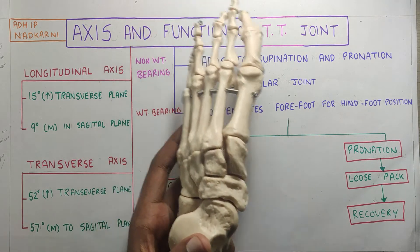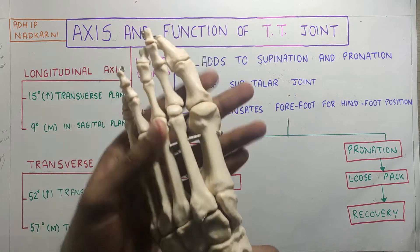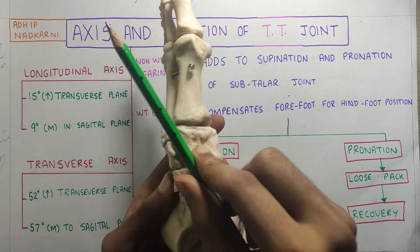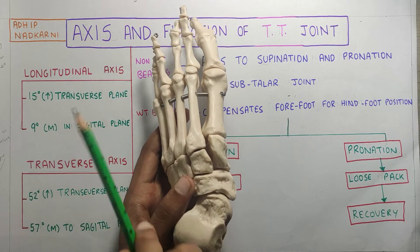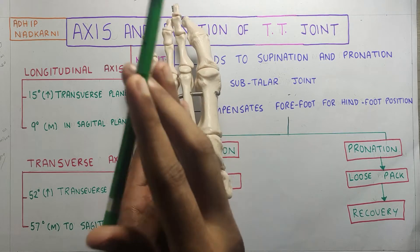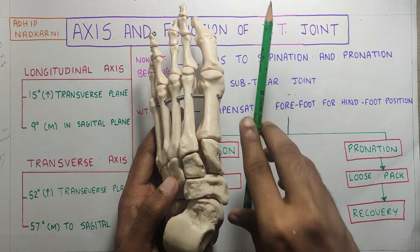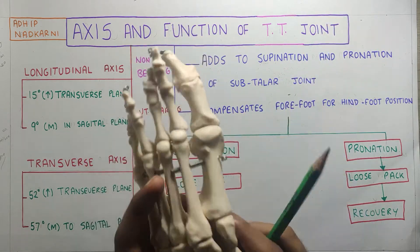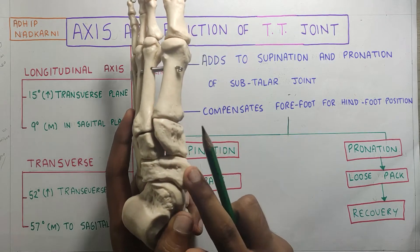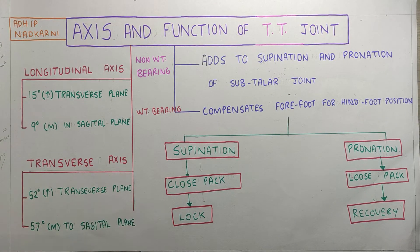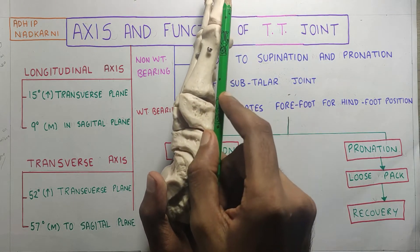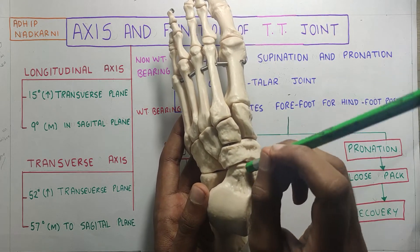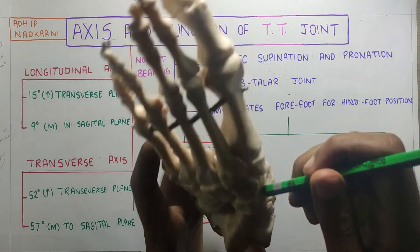The longitudinal axis is inclined 15 degrees from the transverse plane, and when viewed from the top it is 9 degrees medial to the sagittal plane. So it is inclined and medial — somewhat similar to the subtalar joint — and the main movement at this axis is inversion and eversion. The transverse axis is 52 degrees inclined from the transverse plane, and in the sagittal plane it is tilted 57 degrees medially. This axis allows plantar flexion, dorsiflexion, and also abduction and adduction movement.